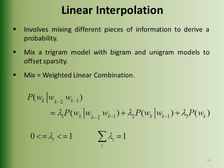The next method is linear interpolation, which mixes different pieces of information to derive a probability. Because unigram and bigram provide different but useful information, we use them both with different weights. Lambda is some function of the frequencies, and we consult all models at the same time to compute an interpolated probability estimate.